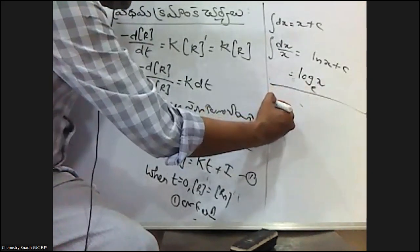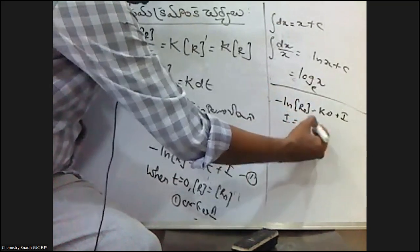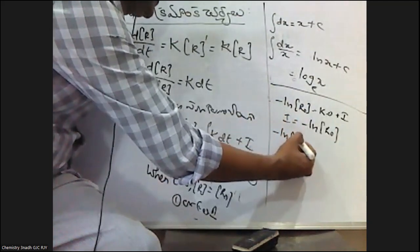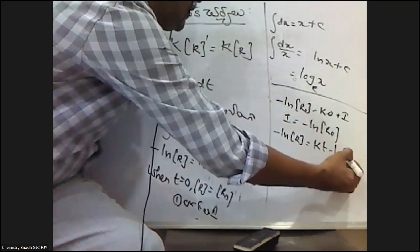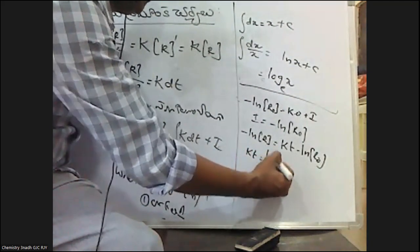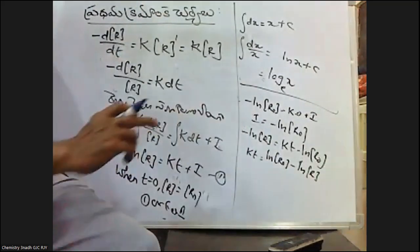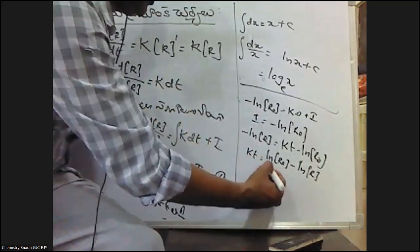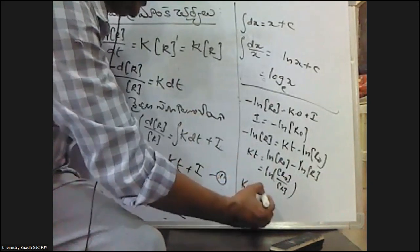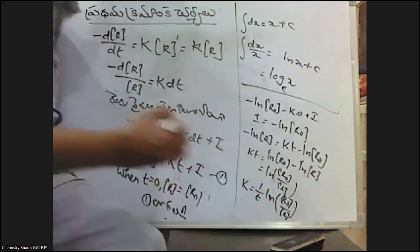At time zero: ln R₀ is equal to k into 0 plus i, so i is equal to minus ln R₀. Therefore, minus ln R is equal to kt minus ln R₀. Rearranging: kt is equal to ln R₀ minus ln R, which by log formula equals ln(R₀/R). So k is equal to 1 by t into ln(R₀/R).